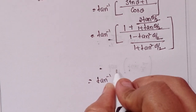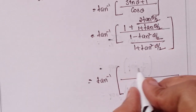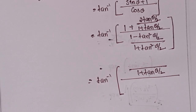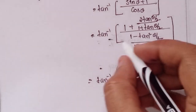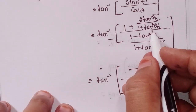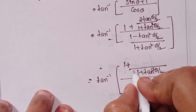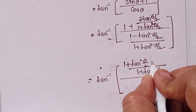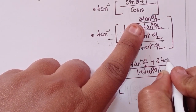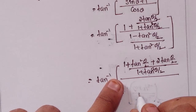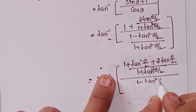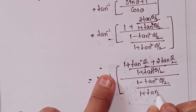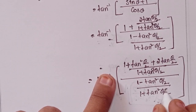Tan inverse — taking LCM as 1 plus tan²(θ/2). Cross multiplication gives 1 plus tan²(θ/2) plus 2 tan(θ/2). Can I write this as a² plus 2ab plus b², which is (a plus b) whole square? So numerator becomes (1 plus tan(θ/2))². In the denominator, 1 minus tan²(θ/2) is (1 plus tan(θ/2))(1 minus tan(θ/2)). These two cancel.